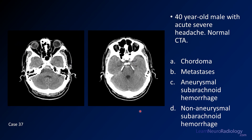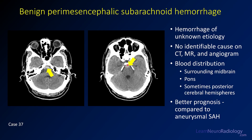Case 37 is a 40-year-old man with severe headache and a normal CTA. Choices are chordoma, metastatic disease, aneurysmal subarachnoid hemorrhage, or non-aneurysmal subarachnoid hemorrhage. The answer is non-aneurysmal subarachnoid hemorrhage. There are blood products ventral to the pons. Since the CTA is normal, we don't have an AVM and probably not an aneurysm unless thrombosed. This is a common location for benign perimesencephalic hemorrhage, which carries a better prognosis than aneurysmal SAH. The etiology is unknown but believed to be venous in origin. These patients still require aneurysm exclusion with multiple CTAs and often a catheter angiogram.